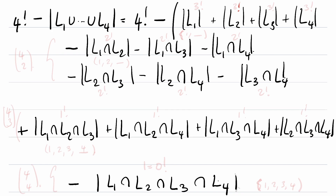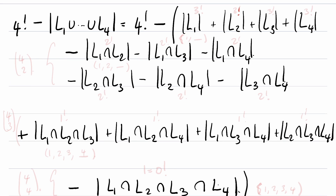How many lists of length 4 have 1 in the first position? These look like lists of the form (1, something, something, something). There are three remaining positions and three other choices without repetition, so this is 3 factorial. The same applies to lists where 2 is in the second position, 3 is in the third, and 4 is in the fourth. How many lists have 1 in the first position and 2 in the second position? There are two remaining choices for two positions, so this is 2 factorial.